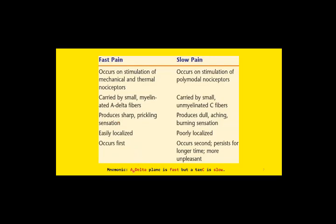Remember the mnemonic: a delta plane is fast, a taxi is slow — A-delta fibers for fast pain, C fibers for slow pain. A-delta fibers are myelinated with greater diameter and greater conduction velocity; C fibers are unmyelinated with smaller diameter and slower conduction velocity. Conduction velocity is directly proportional to the diameter of the nerve fiber.